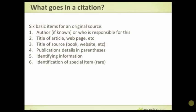Last time we talked about how you do things in Ancestry, and in future episodes I'll do that as well. Right now I want to talk about when you have an original source. Regardless of where you get the information, there are six basic items you want for an original source. First, the author — if known — or who is responsible for this. So if it's a book like 'Evidence Explained,' Elizabeth Shown Mills would be the author. If you're looking at a birth certificate recorded in Rockbridge County, Virginia, then Rockbridge Virginia would be who's responsible.